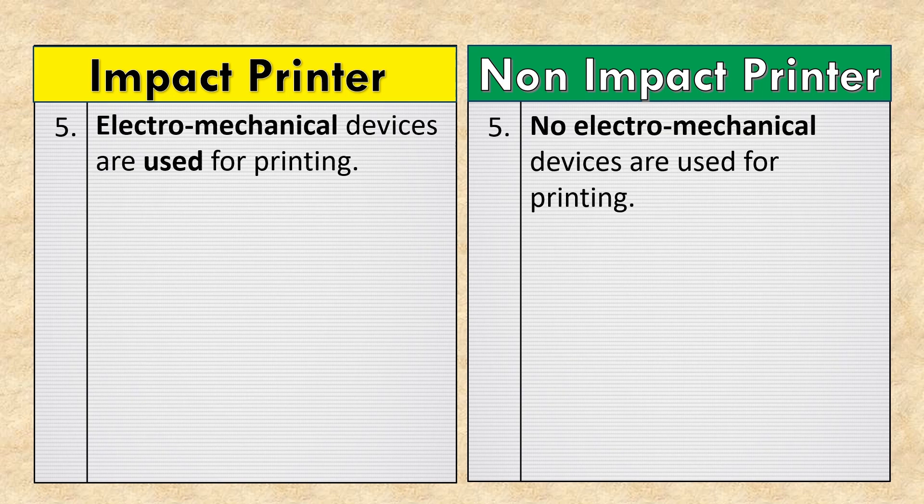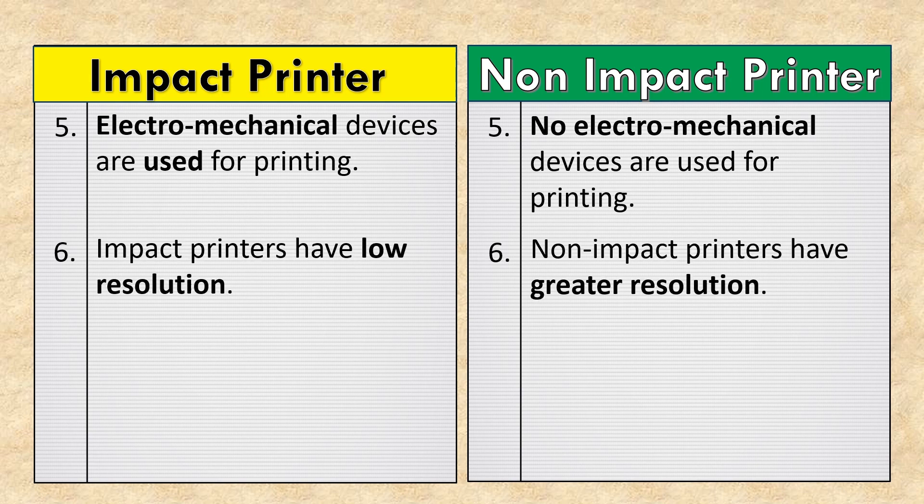In impact printers, electromechanical devices are used for printing. No electromechanical devices are used for printing in non-impact printers. Impact printers have low resolution, while non-impact printers have greater resolution.